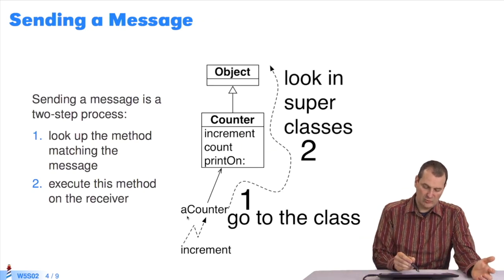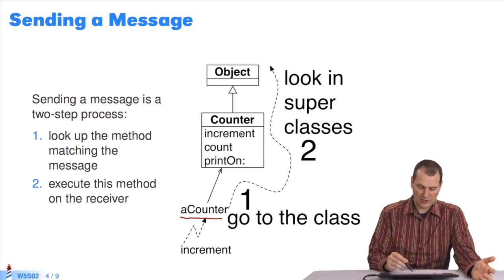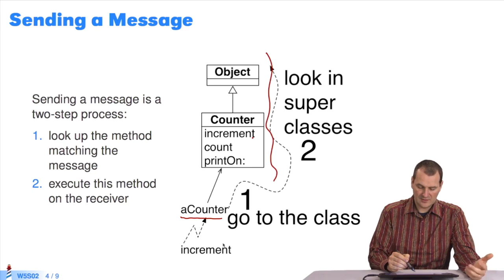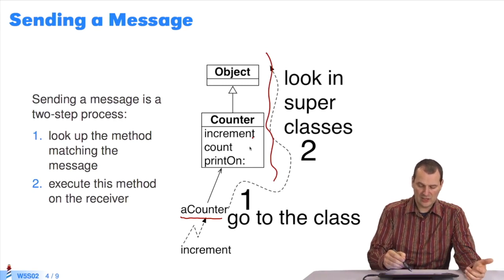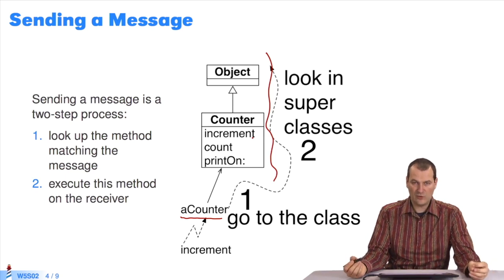is that I have my example of the counter class. When I send the increment message, what will happen? Step 1, I look in the counter class and I'll go back up. If I've increment, it's defined here. If it's a method defined higher up in the hierarchy, it will be sought higher up. In fact, this mechanism is used in Pharo. There's only one. It's used for both instances and classes.